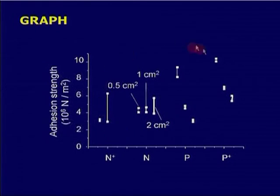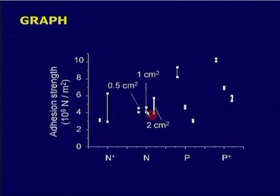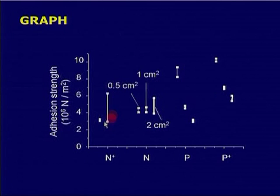When you look at the diagram, many patterns are evident much more quickly. For P plus substrate, adhesion decreases as area increases — three vertical lines correspond to three different areas. Similarly for P-type, adhesion decreases. For N-type, adhesion does not seem to vary much. For N-plus, there is really no pattern at all — there is too much variation between two measurements for the same condition. Graphical form of depiction is always the most powerful.